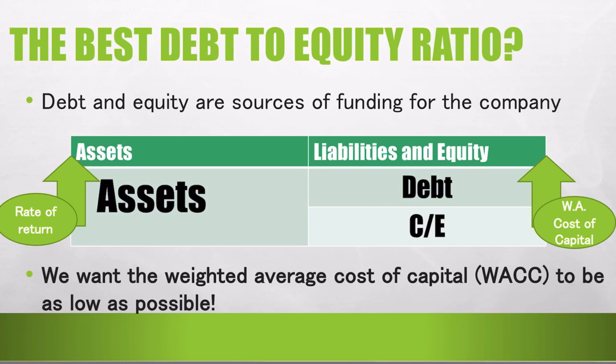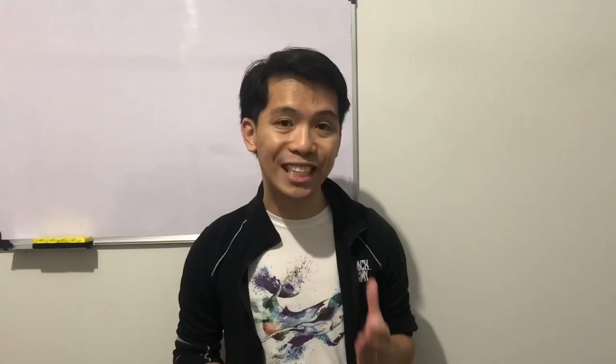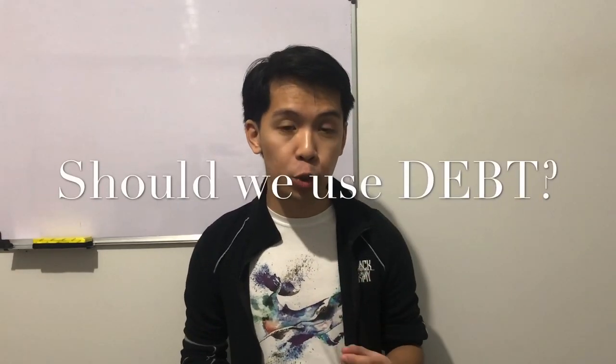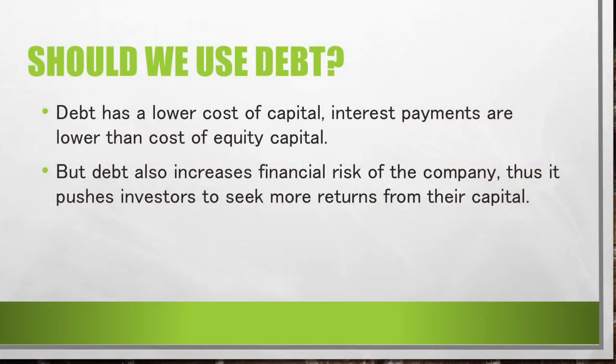As such, we would want higher rates of return for our assets and lower cost of capital for our sources of funding. Hence, we want the weighted average cost of capital to be as low as possible, so that more assets become acceptable. In our attempt to make our WACC as low as possible, should we use debt? Debt has a lower cost of capital — interest payments are lower than the cost of equity capital. Hence, using debt will pull the WACC downward.